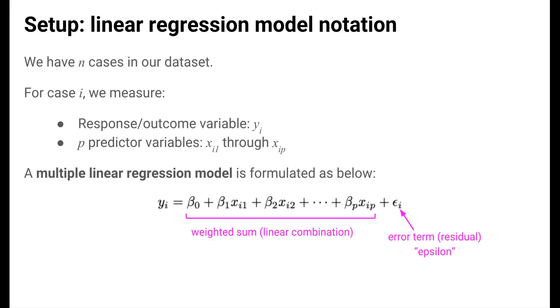We denote this error term, or residual, with the Greek letter epsilon. This model says that on average, we can predict y with the linear combination of the predictors, but the individual responses differ from our prediction by the residual.